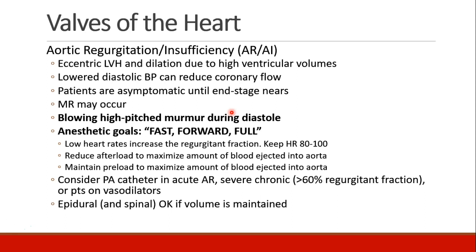The murmur of aortic regurgitation is a blowing high-pitched murmur that occurs during diastole. In these patients, our anesthetic goals are summarized by the mnemonic FAST, FORWARD, and FULL. We want these patients to have a faster heart rate — around 80 to 100 — because as the heart rate gets slower, there's more time for regurgitation. We want less afterload in order to allow as much blood as possible to be ejected into the aorta. We want to maintain a full heart to maximize the amount of blood ejected. These patients may benefit from monitoring with a pulmonary artery catheter, especially with acute or severe chronic regurgitation. Epidural and spinal anesthesia are probably okay as long as you maintain adequate volume status.